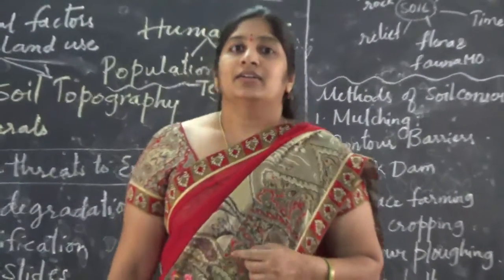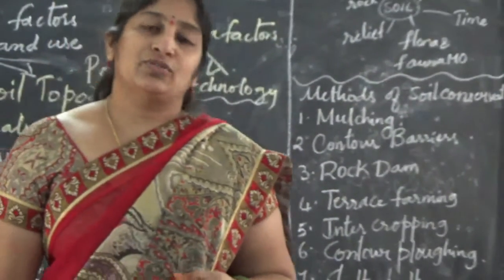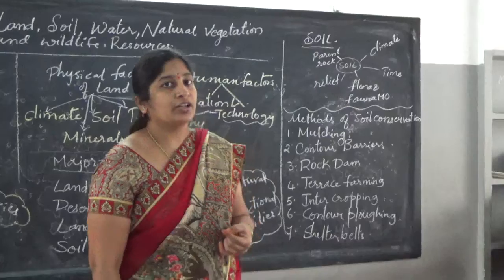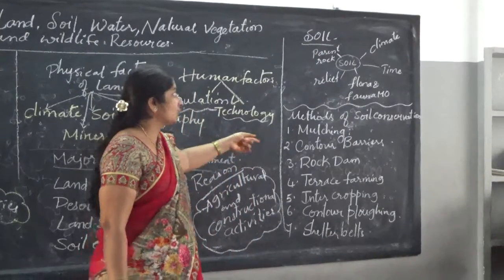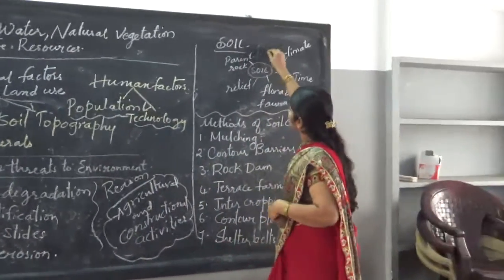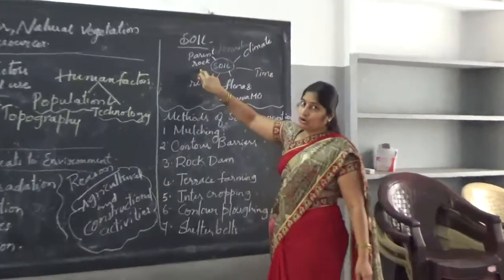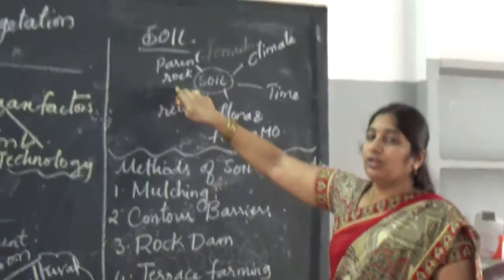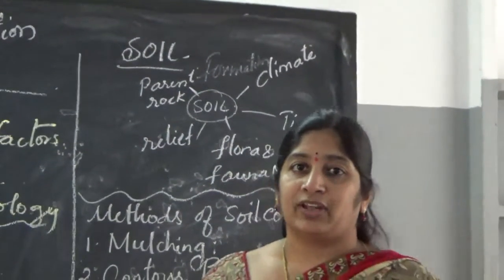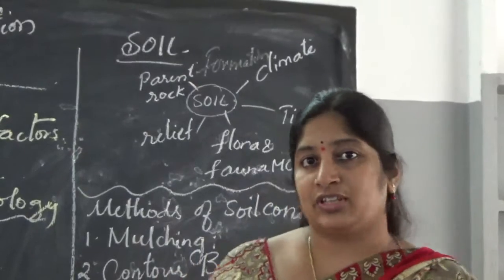Soil is a small granular substance which will take some millions of years to form. What are the different factors for the formation of soil? The first one is parent rock — meaning bedrock, which has some layers of rock. With the process of weathering, the formation of soil depends on this parent rock.